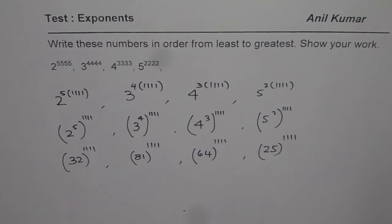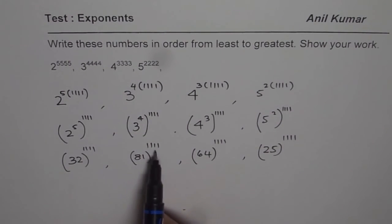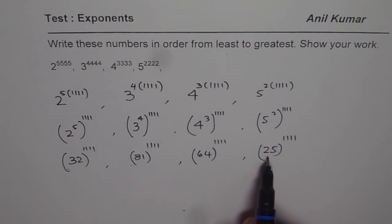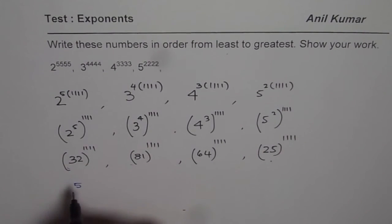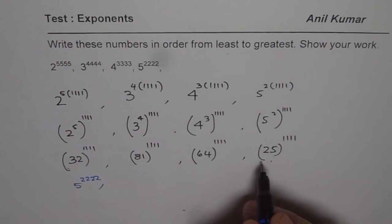Now, you can arrange them, right? Since their exponents are all the same, we have to arrange them from least to greatest. So, amongst them, the least is, this is least. So first number is 5 to the power of 2222, right?